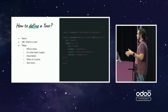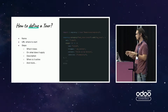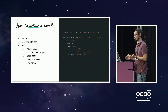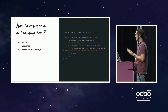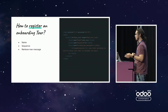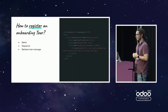Now you have your tour — it's a test tool by default. If you want an onboarding tool, you take the tour in the registry and register it as an onboarding tool by creating a record in the XML data: a 'web.tour' record. It has only a few arguments: the name (must match the one in the registry), the sequence (to define execution order), and the rainbow man message — the little rainbow effect at the end of the tour with a message. That's all you need for an onboarding tool.